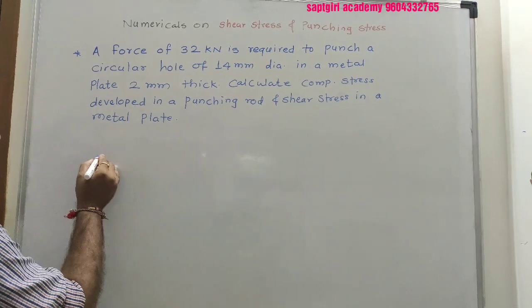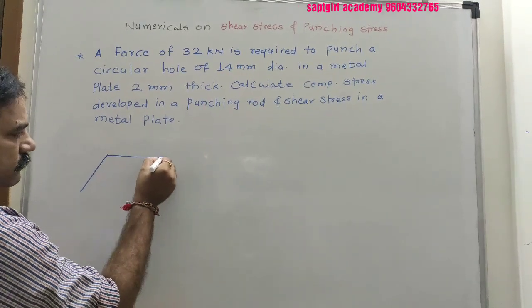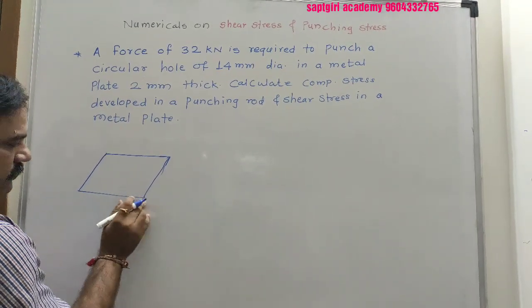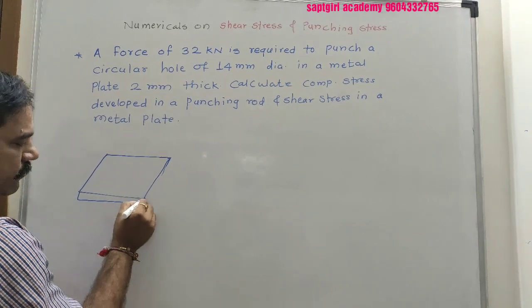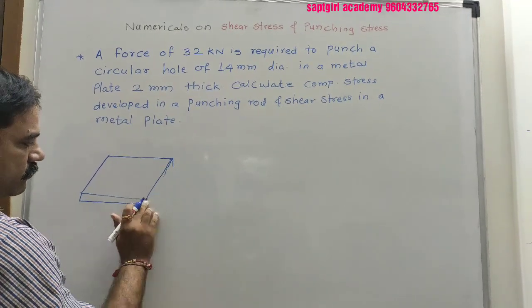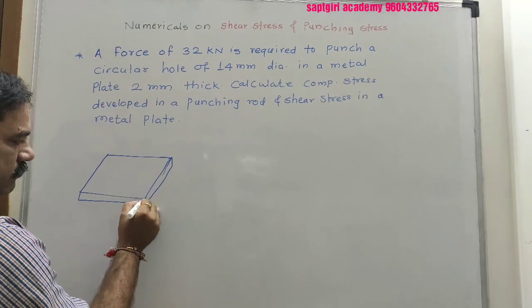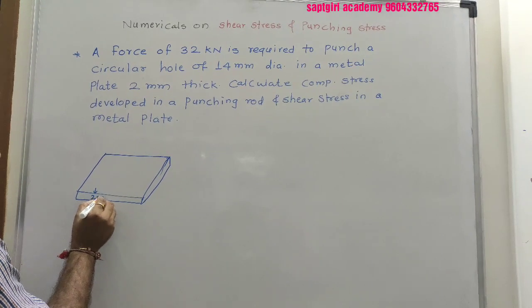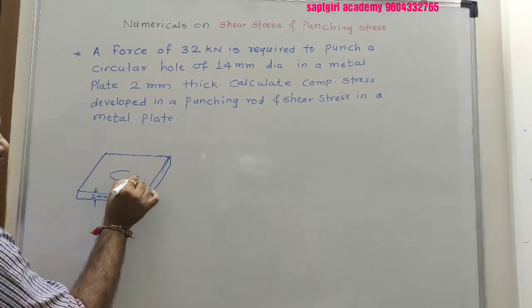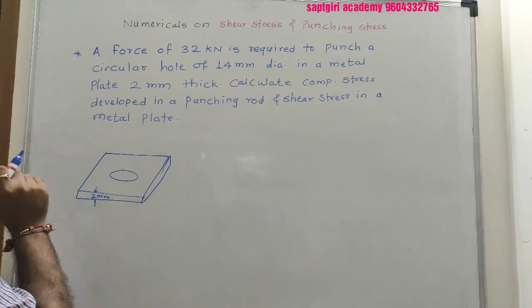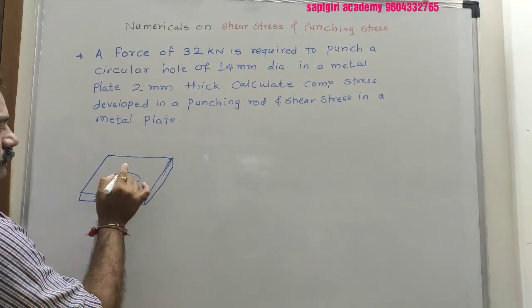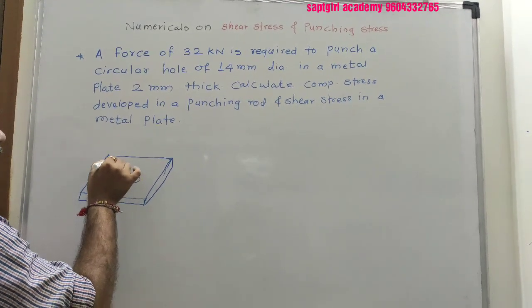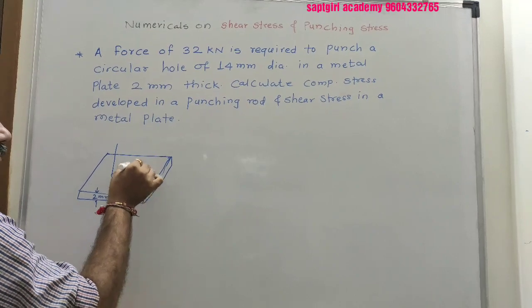Here, one metal plate is given having a thickness of 2 mm. This hole has to be punched by using a punch.